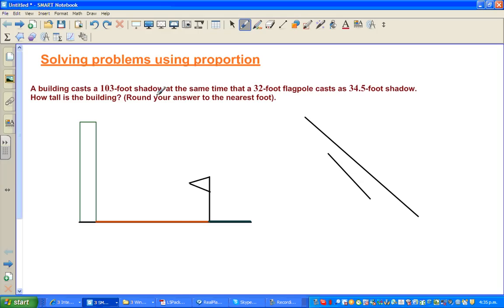A building casts a 103-foot shadow at the same time that a 32-foot flagpole casts a 34.5-foot shadow. This is the building, and this is the flagpole.